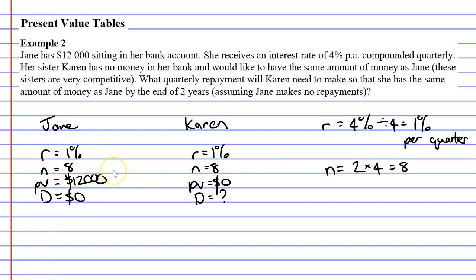If Jane has a bank account with $12,000 in it at the very beginning, and she leaves that money in that bank account for a period of two years or eight quarters, and it accumulates interest at a rate of 1% per quarter, how much money will she have at the end of the two years? I've calculated this already — the future value, or the amount of money she will have at the end of two years, is $12,994.28.